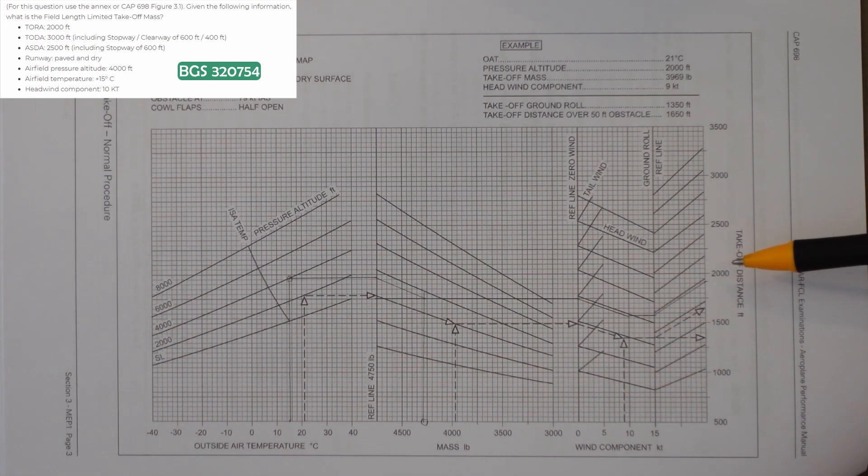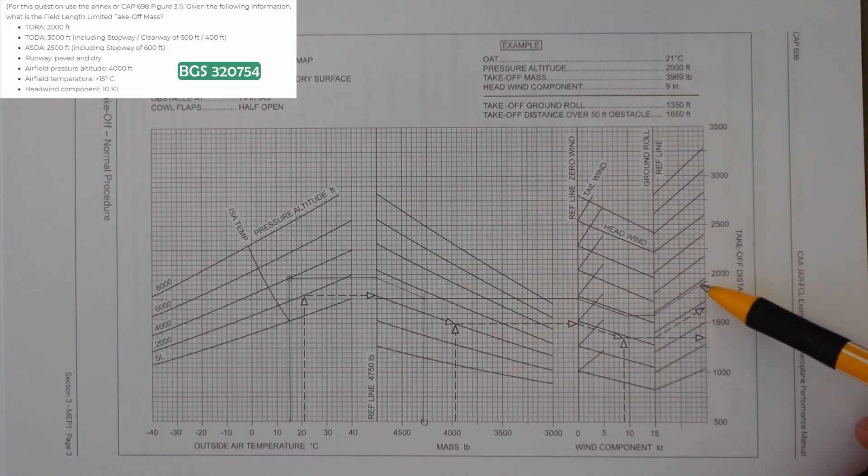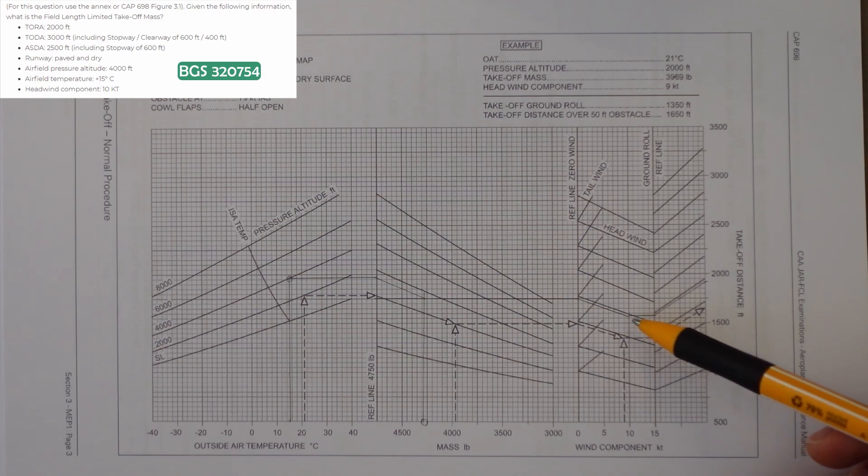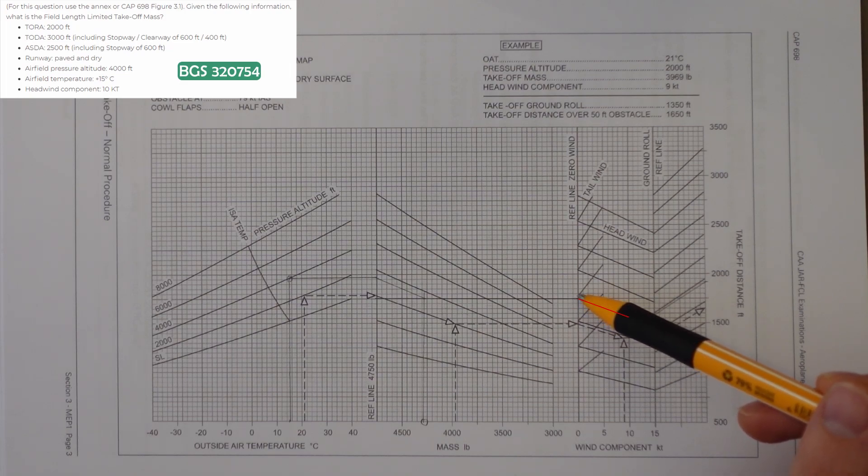Then we would work from this side. So we've got our distance that we just talked about. We follow the guideline down, we would then go across to the wind, and then from that wind which was 10 knots, we go up following the headwind guideline up the way until reaching this reference line.